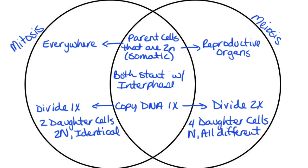The actual type of cells produced is going to be different. In the case of mitosis we're getting somatic daughter cells, whereas in the case of meiosis we're getting gametes — so this is going to be our egg and sperm on the meiosis side. That's the big picture of what's going to be different about them.